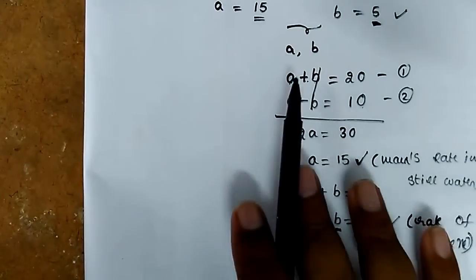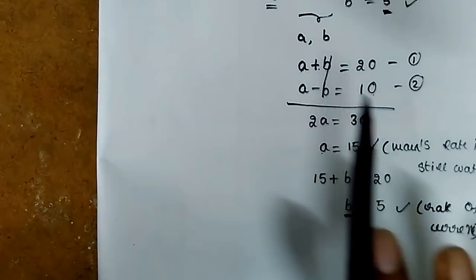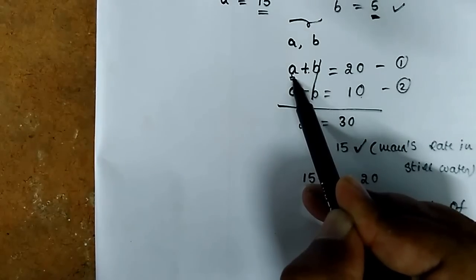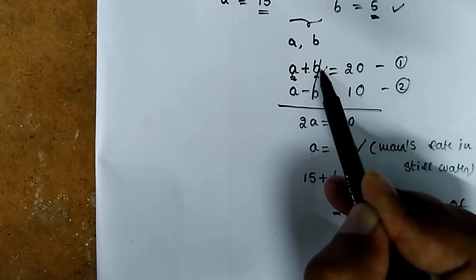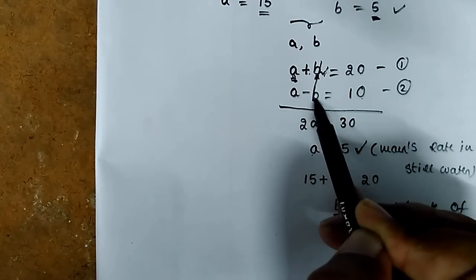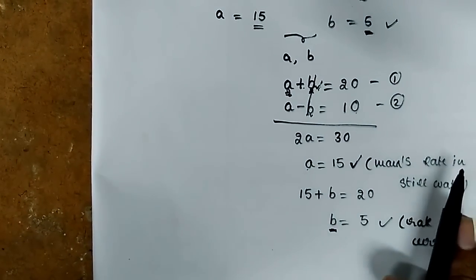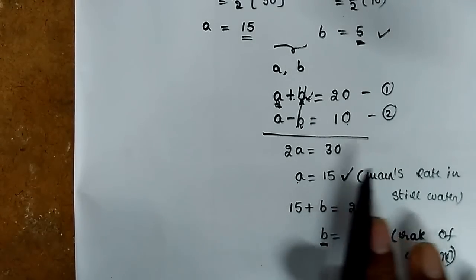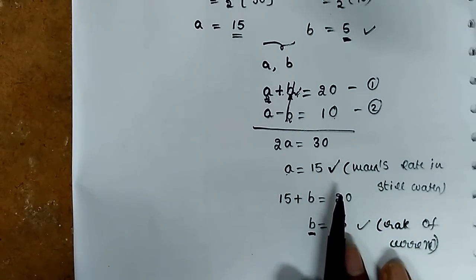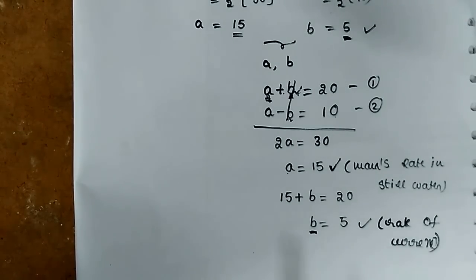So this concept is clear and easy to do. You can review, comment, and share the video. A is the human's or boat's rate in still water, B is the water rate, and A plus B is the downstream rate. So don't forget to subscribe and share. Thank you.